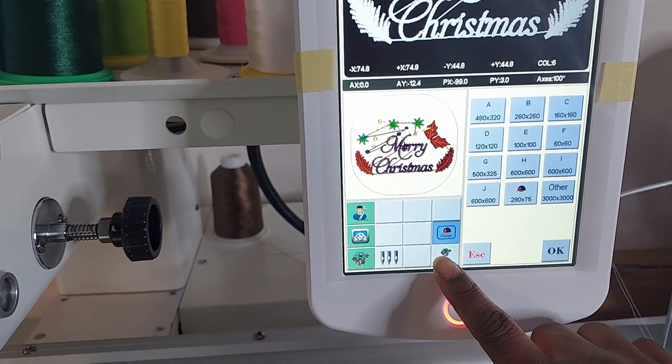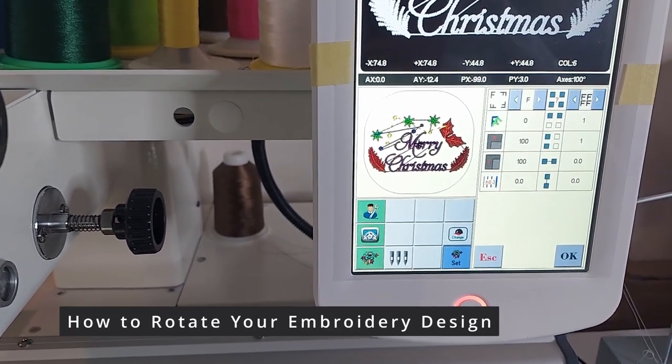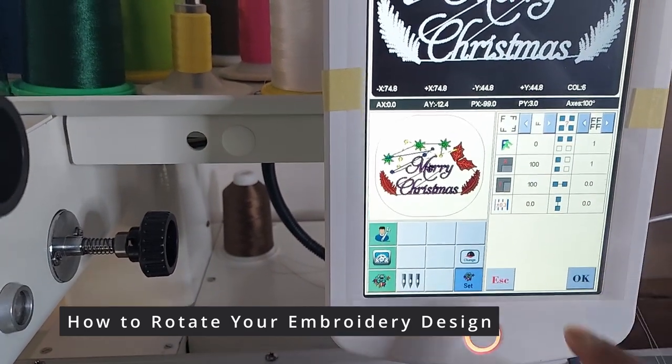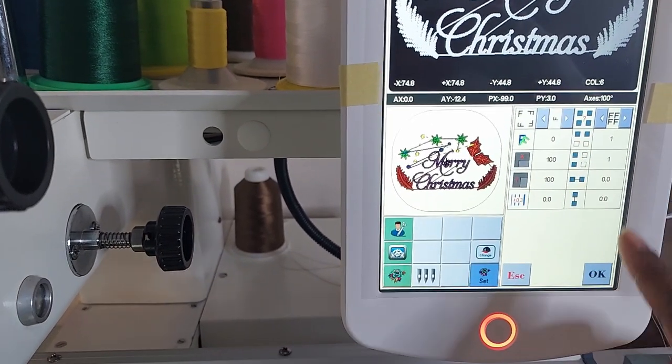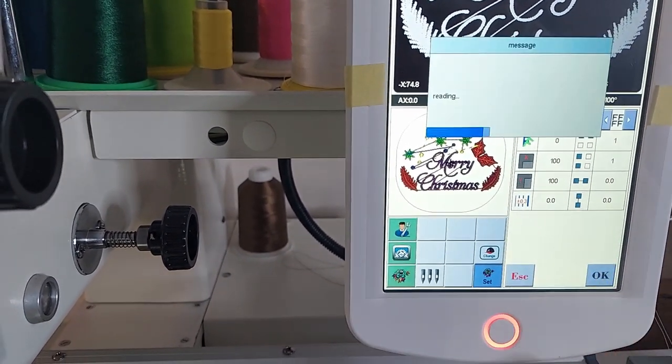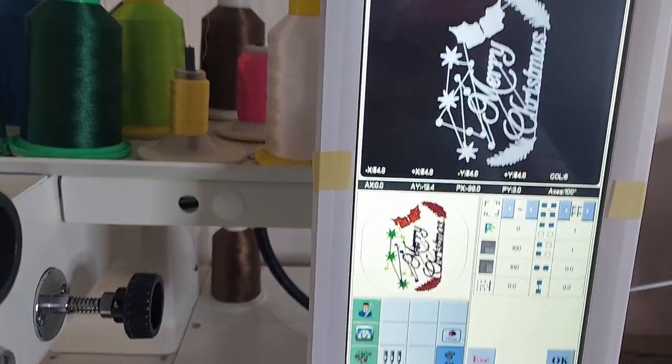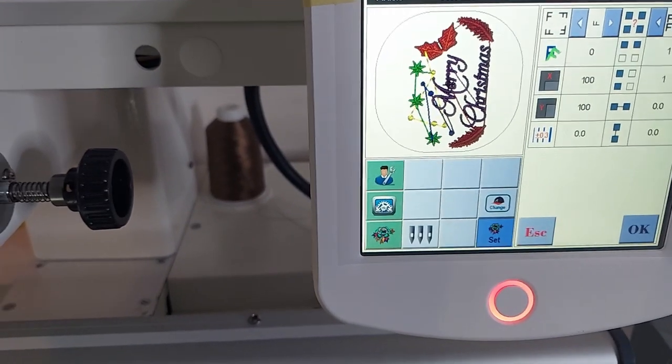After selecting the hoop size you're going to use, you may or may not need to rotate your design. This will depend on how you hoop your design. But just in case you want to rotate your design to some certain direction, this is how you do it. Press the set button.